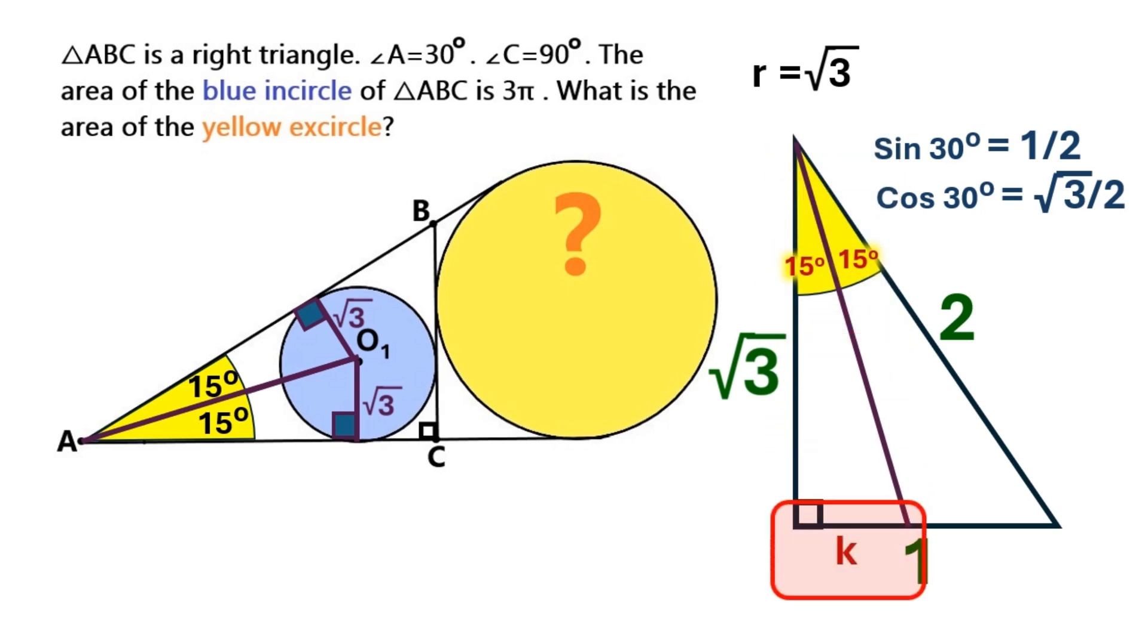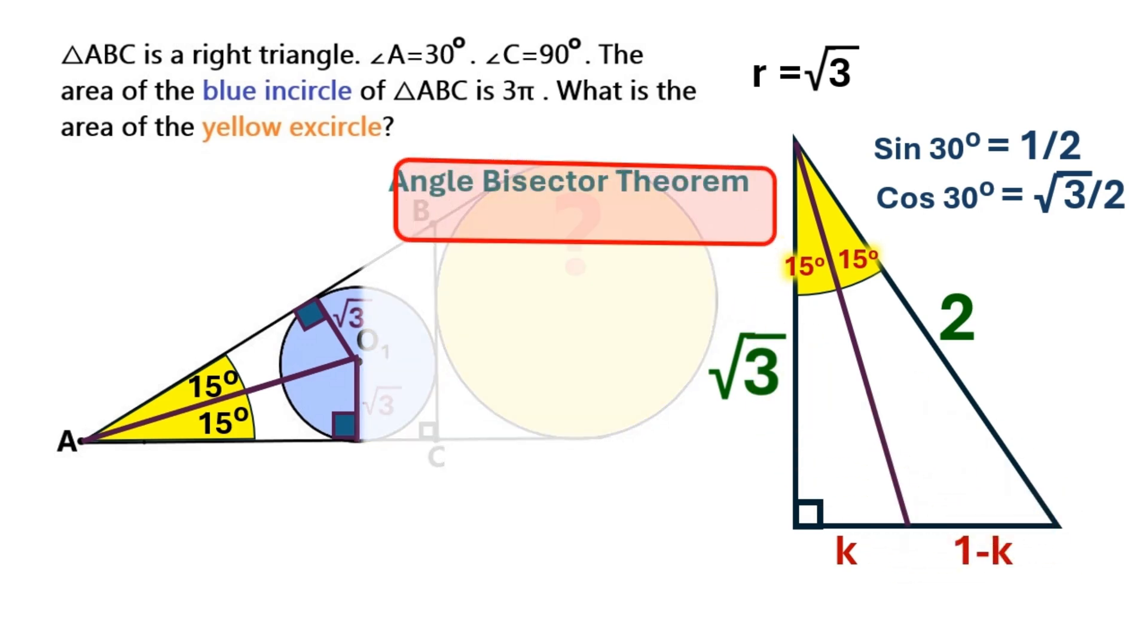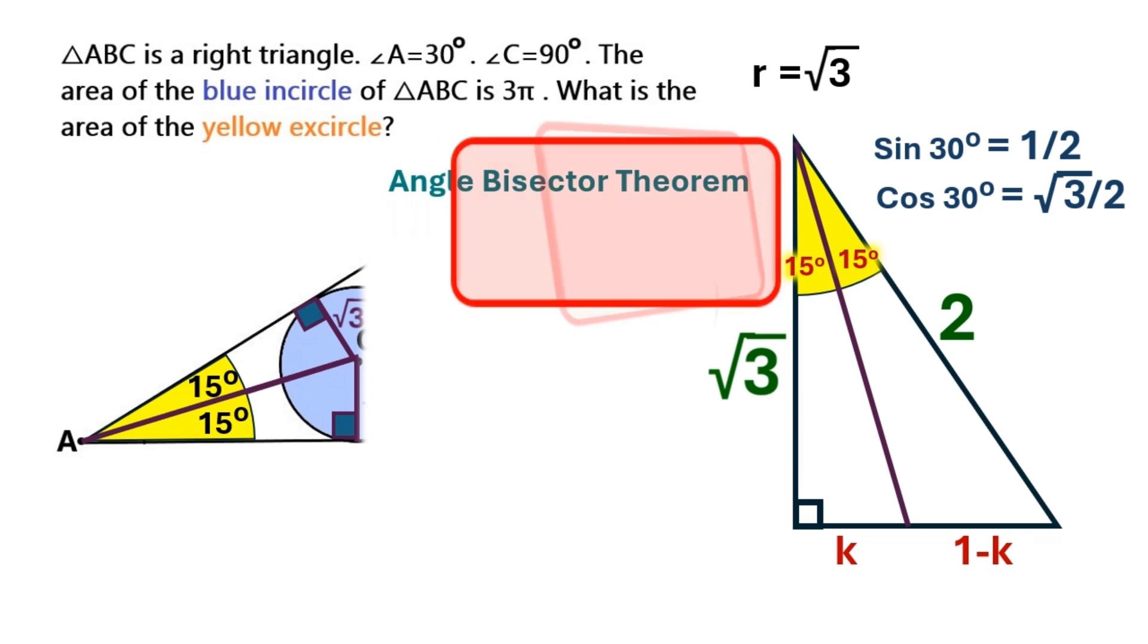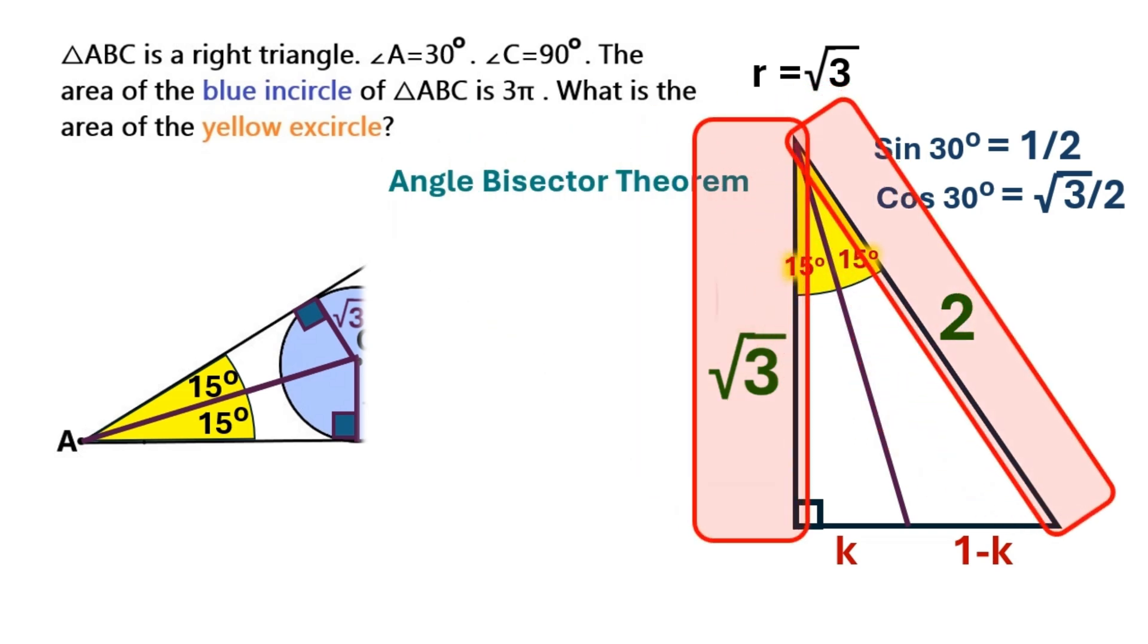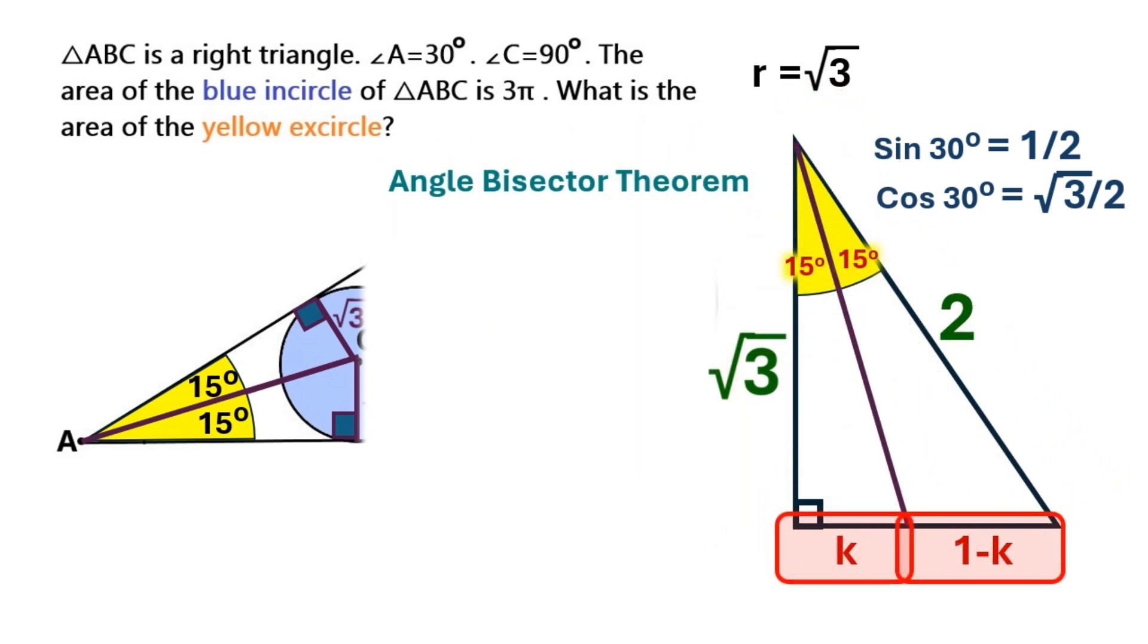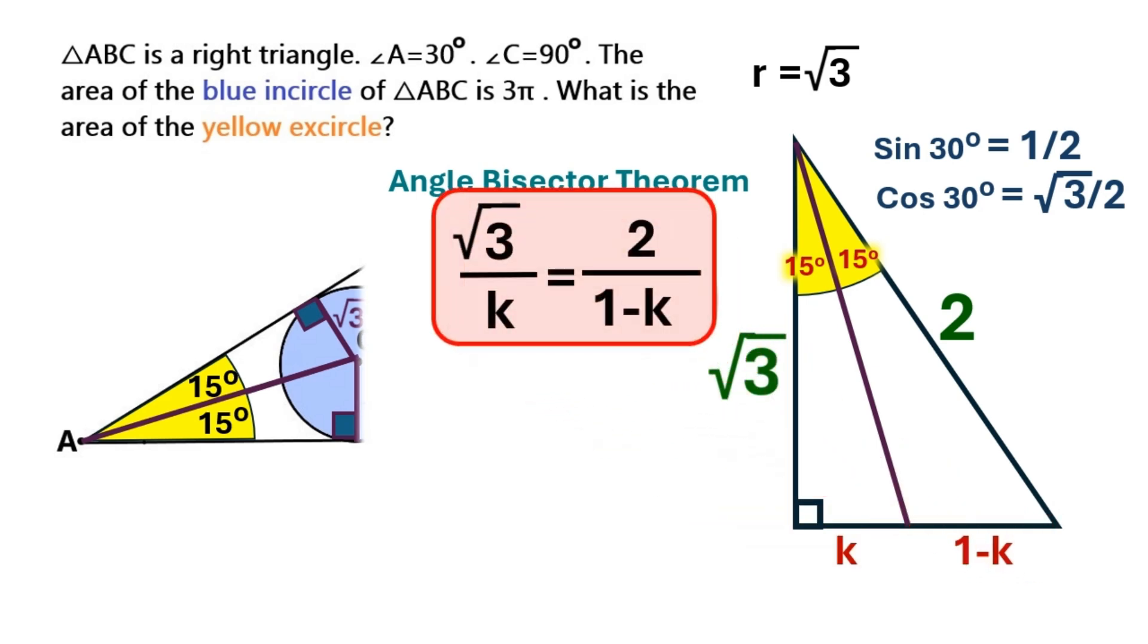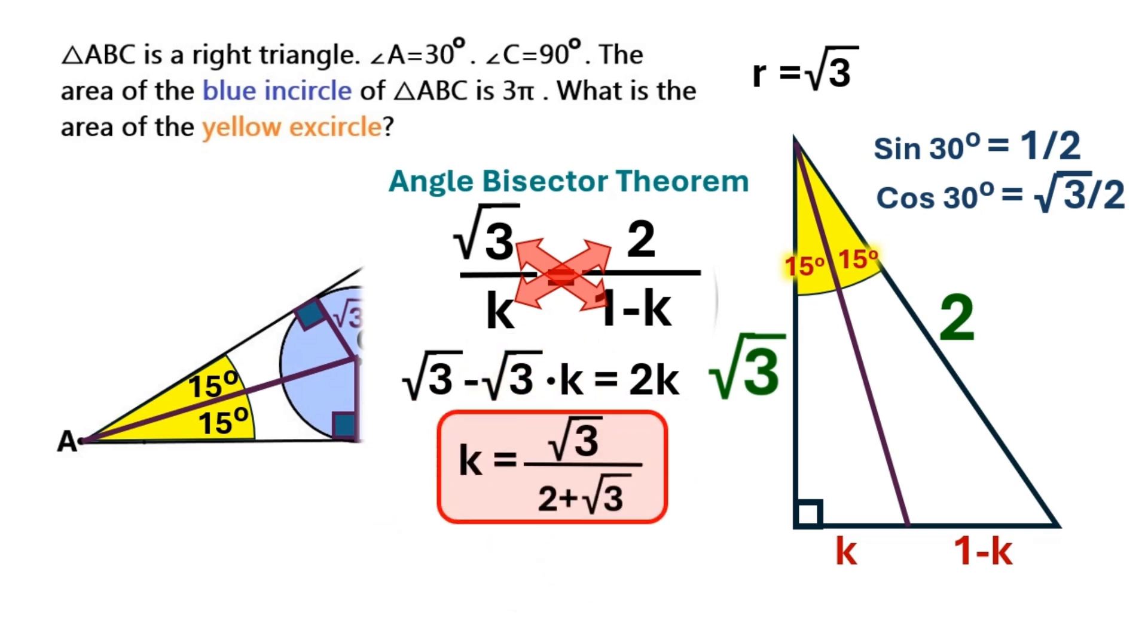If we call this distance k, this next distance naturally becomes 1 minus k. Now according to the angle bisector theorem, the proportion of these two sides must be equal to the proportion of these two line segments. We can put it as an equation like this. I'll do all the math for you, and it turns out k is this ugly expression which I will put down here where it belongs.